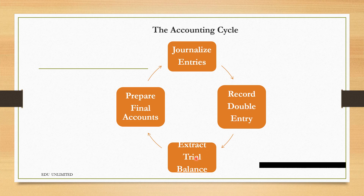The trial balance includes a debit and a credit side list of balances, and it must balance. It is the information from the trial balance that we use to prepare the final accounts. The final accounts include the income statement and the statement of financial position, also called the balance sheet. This is the simplified version of the accounting cycle.